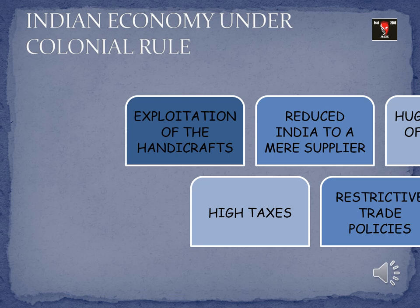Britain brought in policies that were more favorable for Britain and less favorable for India. First was the exploitation of handicrafts. Since ancient times, India had been producing different commodities such as handmade baskets, materials made from precious stones, pearls, jewelry, etc., which had great demand in the global market — all made possible by the finest quality raw materials available in India.